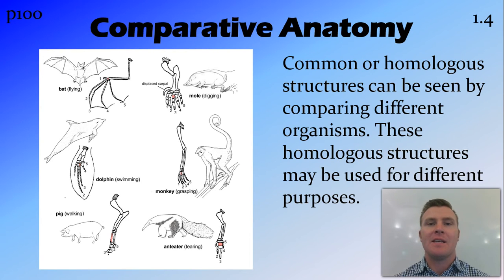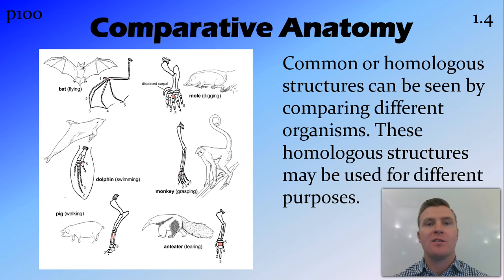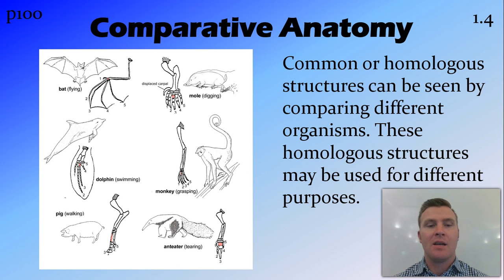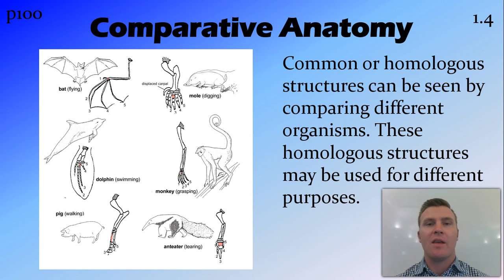Comparative anatomy is the study of different animals and how they have similar or homologous structures, even though they may use these structures for very different things. For example, the pentadactyl limb is found across many different animals, including bats in their wings, dolphins in their flippers, and humans in their hands. While used for different purposes, their anatomy is very similar, showing that there is some sort of evolutionary link that has changed over the course of time.